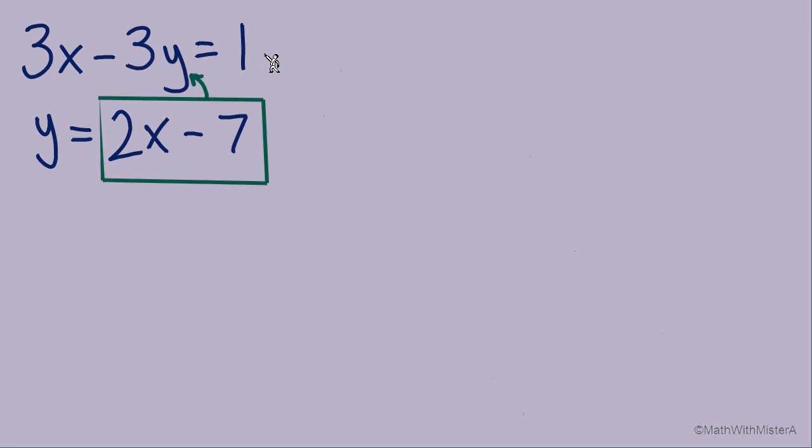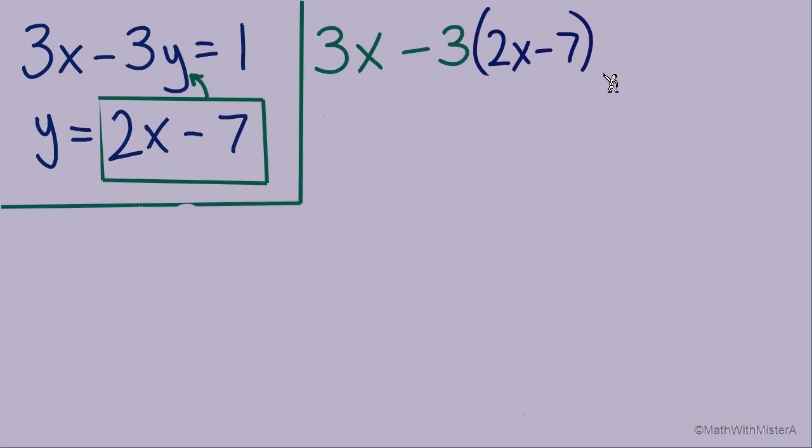And now I'm recopying this equation that I just substituted into, 3x. Now we have minus 3 times y, so minus 3 times the expression 2x minus 7, equals 1.